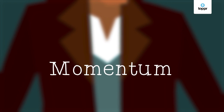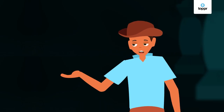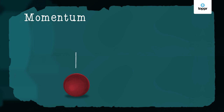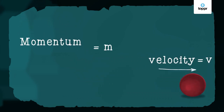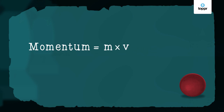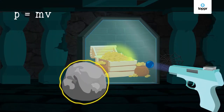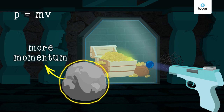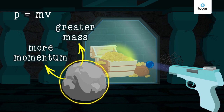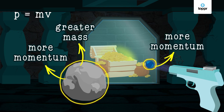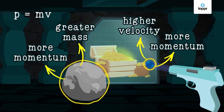Momentum gives us a better idea about force. For an object with a mass m and velocity v, momentum is given simply as their product. We denote it by the letter p. So p is equal to mv. So the rock had more momentum because it had a greater mass. The marble had more momentum because of its higher velocity. And because of this large momentum, both were able to break the glass.